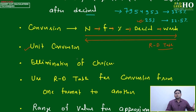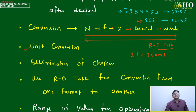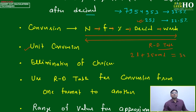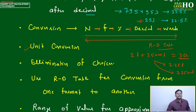Unit conversion is another important point, especially for arithmetic questions and DI caselets where units appear. All data in one question must be in the same unit before calculation — otherwise your calculation becomes meaningless. For example, if 2 liters of milk is mixed with 350 milliliters of milk, you cannot simply write 352 — you must first convert to the same unit: 2.35 liters, or 2350 milliliters.